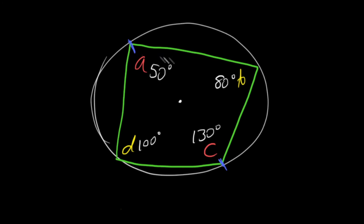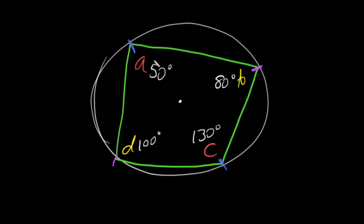Angle A is intercepting the arc from here — we follow the angle to here — and that takes up this portion of the circle. Angle C intercepts the rest of the circle. Those also combined to 360 degrees, and one-half of that is 180. Therefore, these two combined must be 180 degrees.